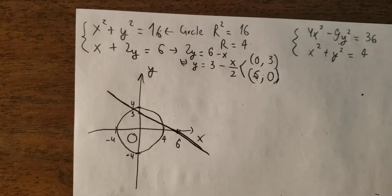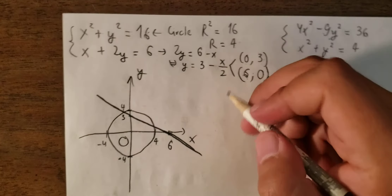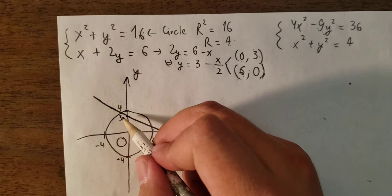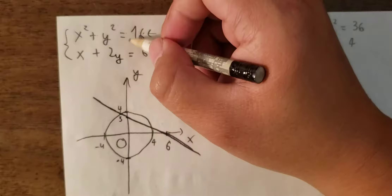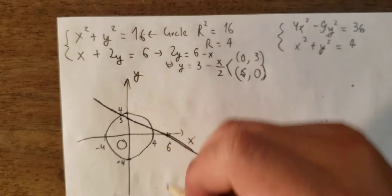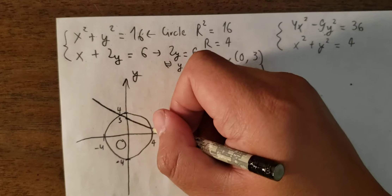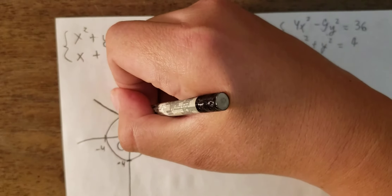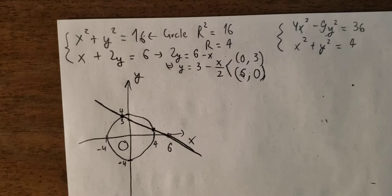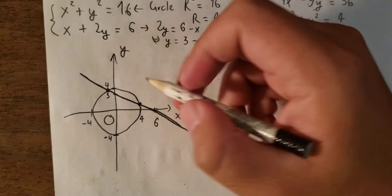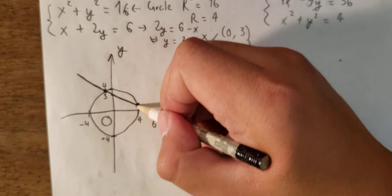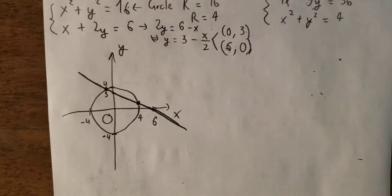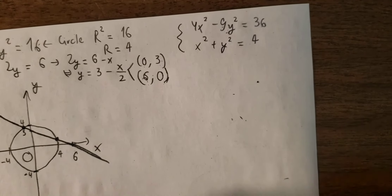We can see that there are two solutions in this system — this location here and this location here. So this is the technique of how to find the solution by drawing the graph.